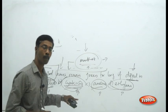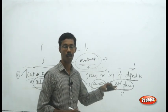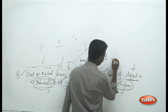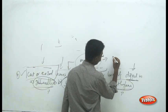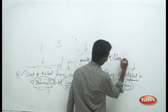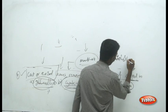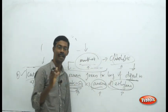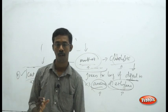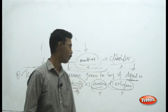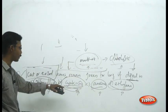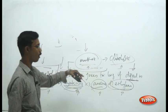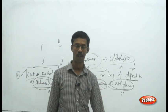Cytokinins promote the formation of more chloroplasts and chlorophylls, so the structure remains green for a long time. The answer for this question: cytokinins make the cut or excised leaves stay green for a long time.